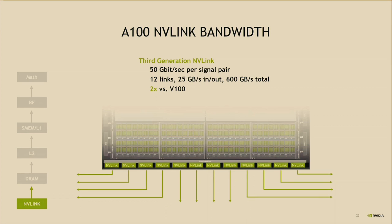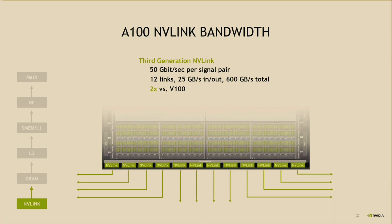In the next section we'll talk about how to use NVLink to build multi-GPU systems. To summarize this section, A100 achieves 2 to 3x improvements starting from TensorCore math bandwidth at the top, going down through register file and shared memory bandwidth and capacity with the new TensorCore and async copy instructions, to the large gain in L2 bandwidth with the new split structure, increased L2 capacity with residency controls for reducing DRAM bandwidth, and then down through DRAM and NVLink.